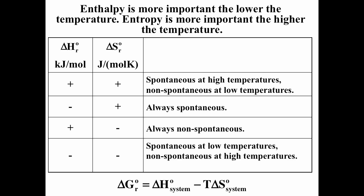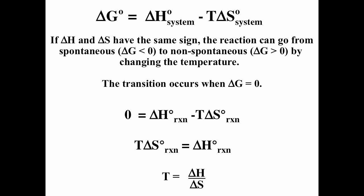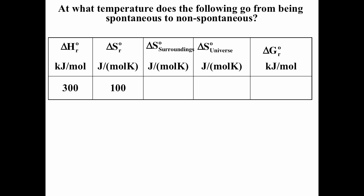It's worth noting that from ΔG = ΔH − T·ΔS, enthalpy is more important at low temperatures and entropy is more important at high temperatures, because of the T multiplier on the entropy term. The reaction goes from spontaneous to non-spontaneous when ΔG = 0. Setting ΔG to zero and solving for T gives: T_transition = ΔH / ΔS — the temperature at which the reaction changes from spontaneous to non-spontaneous.